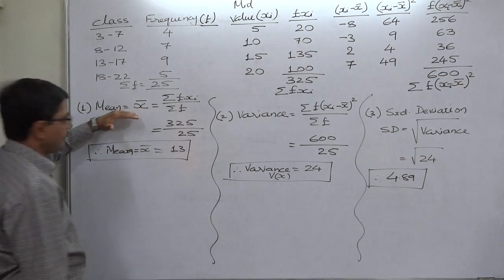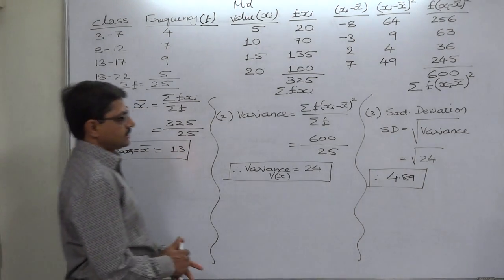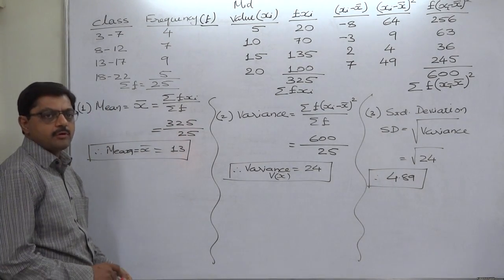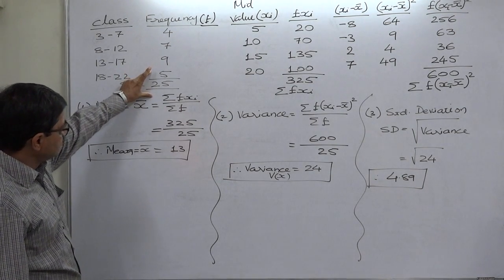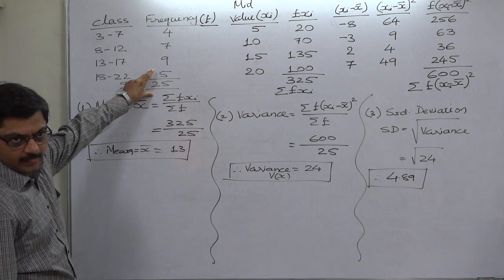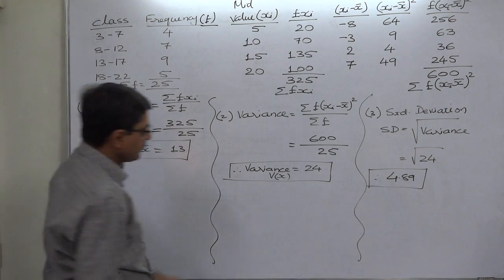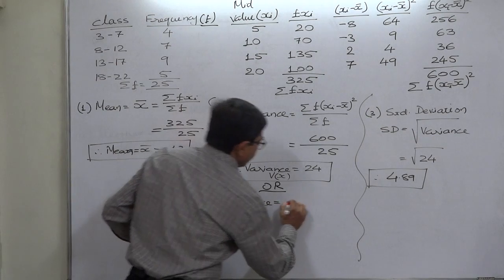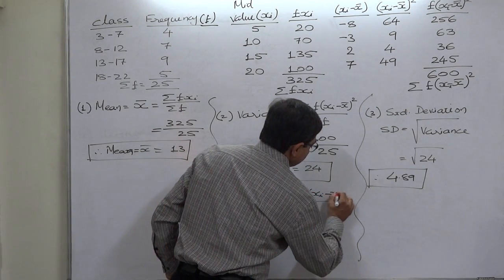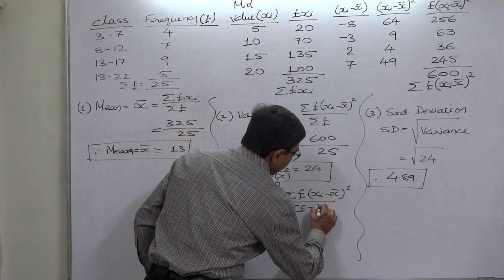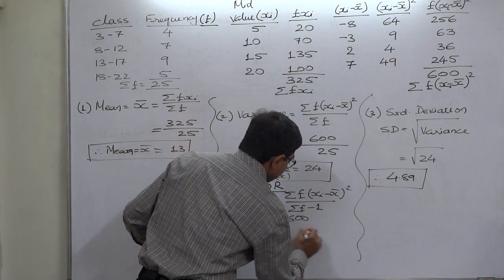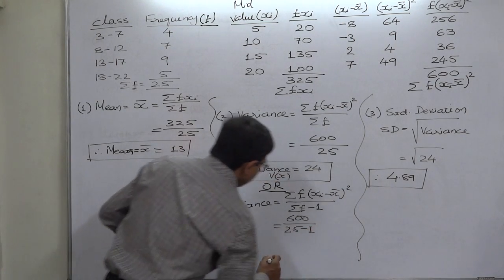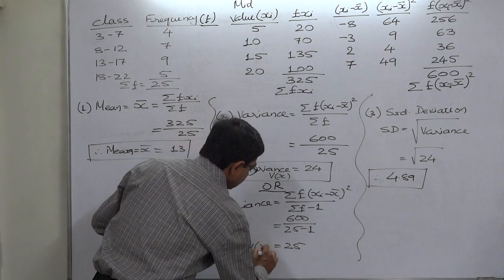Many authors of reference books suggest that we should divide sigma f into x minus x bar whole square by n minus 1 instead of n. Many authors suggest that when we have a large sample, then we need not subtract 1 from n. According to senior statisticians, a sample of 25 is a small sample. If we take their suggestion into consideration, then variance equals 600 divided by 25 minus 1, which means 24, and 600 divided by 24 will be 25. So in that case the variance comes to 25.